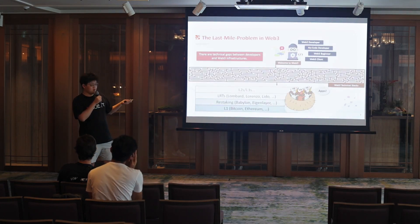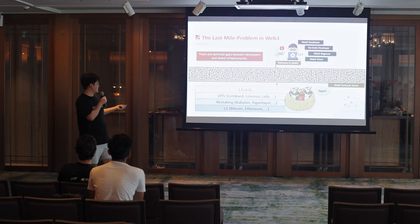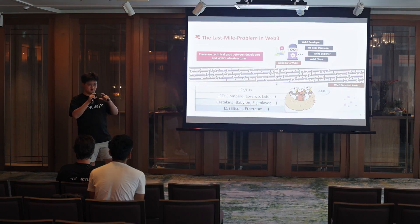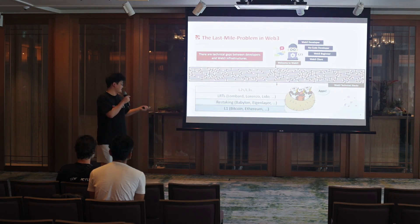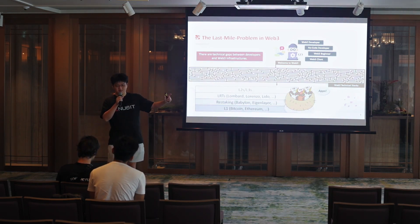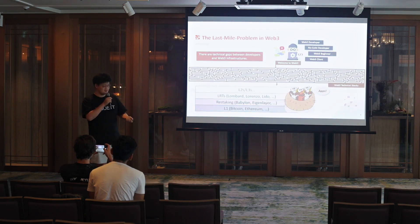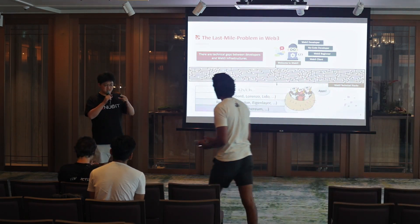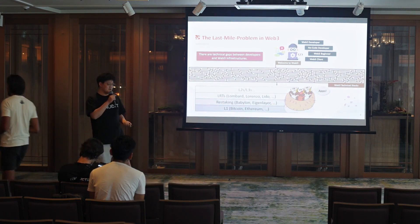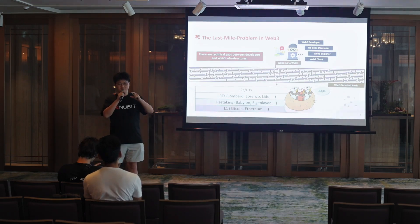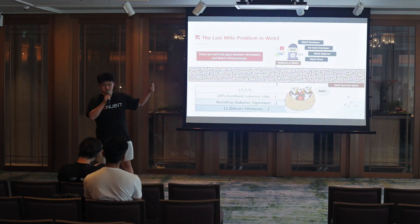So what problems are we trying to solve at Nubit? Let me first take a look at the current landscape of Web3. We have a lot of layer-one solutions such as Bitcoin and Ethereum. Based on these crypto assets, we have a lot of restaking protocols such as Babylon and Eigenlayer, to reuse these assets to secure other blockchains. And on top of that, there are layers upon layers of protocols, all the way up to layer 2.